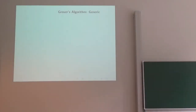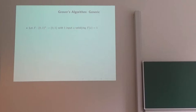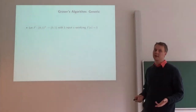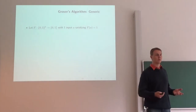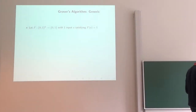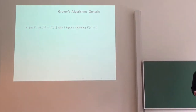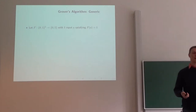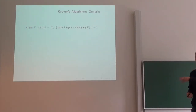Grover's algorithm is a generic optimization algorithm, meaning you can apply it to any black box function that comes with some description of what correct answers are. You're given access to a function f that maps bit strings to boolean values — it maps the correct bit string to one, and all other bit strings to zero.